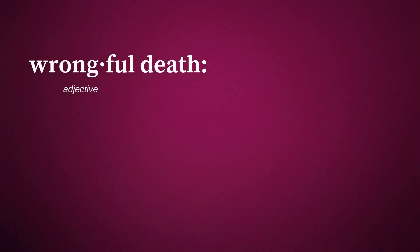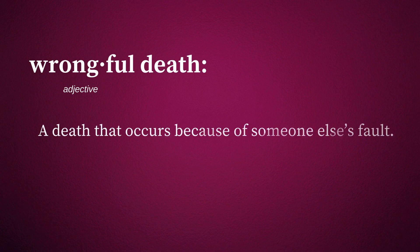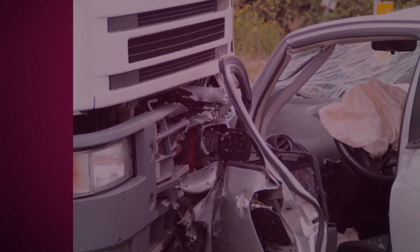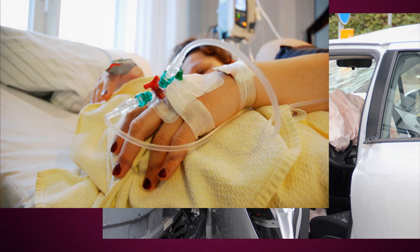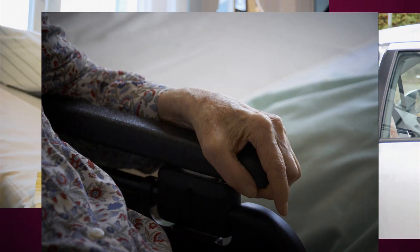First, it's important to understand what a wrongful death is. A wrongful death is a death that occurs because of someone else's fault. Examples of wrongful death include when motorists are killed in a crash because a semi-truck driver illegally turned in front of them, when a patient dies after a doctor misdiagnoses and fails to treat a serious illness, or when a nursing home resident got a fatal infection from a bed sore caused by a nursing home staff's substandard care.